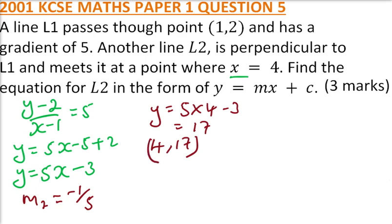Now, we have a point and the gradient which we can use to find the equation. So, we say (y minus 17) divided by (x minus 4) is equal to minus 1 over 5. So, that is how you get the equation.